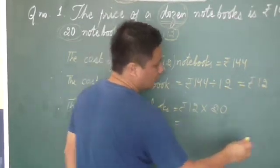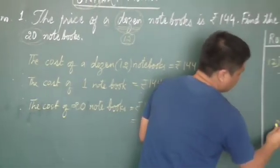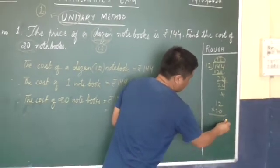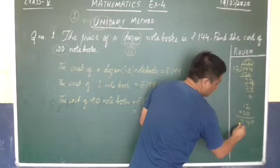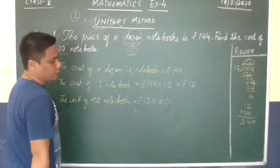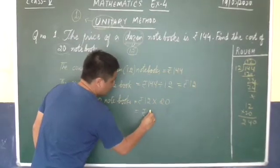So 12 times 20, 2 times 4, 2 times 2, 240 rupees. So rupees 240.